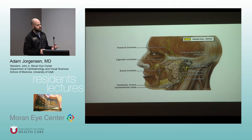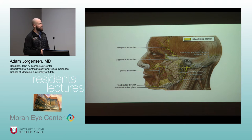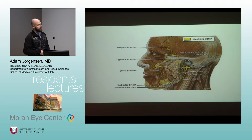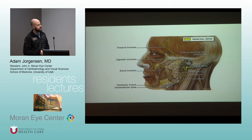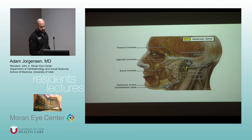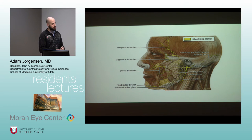There's a mnemonic for remembering the five branches: 'To Zanzibar By Motor Car' — standing for Temporal, Zygomatic, Buccal, Mandibular, and Cervical. The submandibular must just be another little branch off the mandibular. So the nerve branches into these five main branches within the parotid gland, dissecting right between the two lobes of the parotid gland.